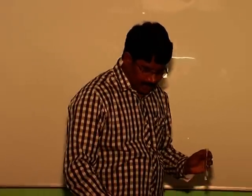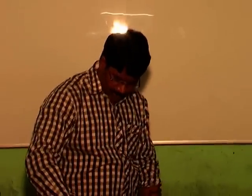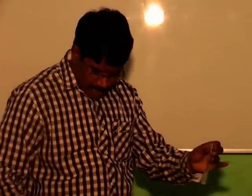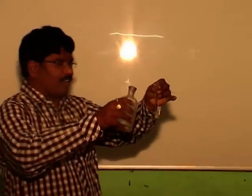To identify third group cations, we need to take the salt solution and add ammonium chloride and ammonium hydroxide to it. I am taking a small quantity of the salt solution and to this I am adding ammonium chloride, and then after adding ammonium chloride, I am adding ammonium hydroxide.